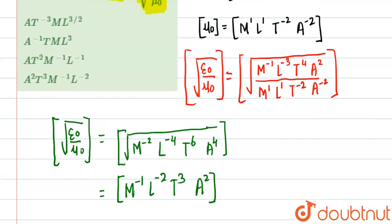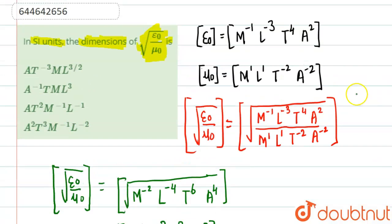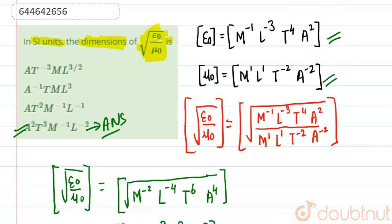We match this with the options. There is only one option with A squared, so we match with that: T three, M minus one, L minus two, A two. Our answer is option D. This result should be remembered properly as it comes in handy a lot.